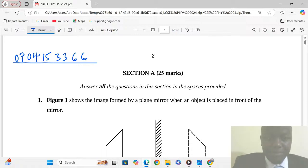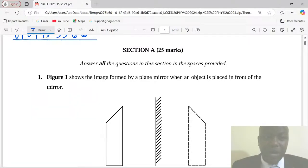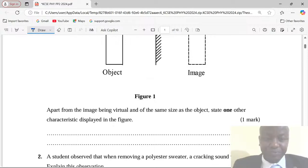From the paper we begin with number one. In section A, figure one shows the image formed by a plane mirror when an object is placed in front of the mirror. We can see an object, then the image formed, and also see the plane mirror. The question now: apart from the image being virtual and of the same size as the object, state one other characteristic displayed in the figure.